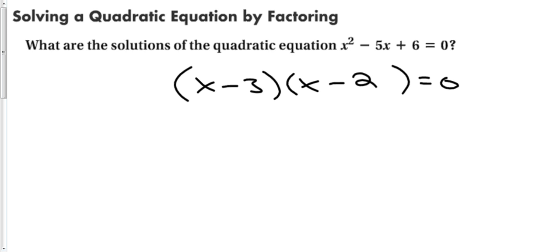Now, because of the zero product property, one of those two terms must be equal to zero, which means that x minus three has to be equal to zero, or x minus two has to be equal to zero, which means that x is going to be equal to three, or x is going to have to be equal to two. And so those are my two answers. Those are the two places where this parabola crosses the x-axis at three and at two.